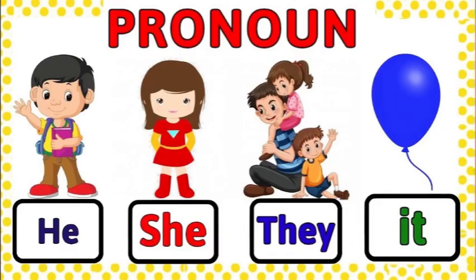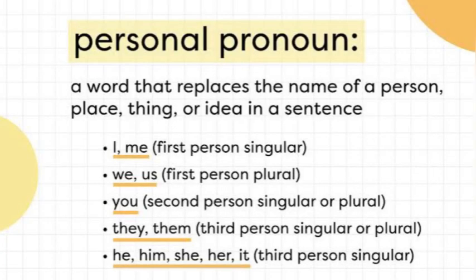اس slide کو دیکھئے — pronoun کو مزید explain کرنے کی کوشش کی ہے۔ علی ایک لڑکا ہے؛ اس کا نام replace کریں گے تو 'he' لے آئیں گے۔ جس طرح Arabic grammar یا Urdu grammar میں مذکر کی ضمیر اور مونث کی ضمیر ہوتی ہے۔ جب جمع ہو جائے — تین سے چار لوگوں کے نام ہوں — تو 'they' لے آتے ہیں۔ غیر جاندار چیز کے لئے 'it' کا استعمال کرتے ہیں — جیسے balloon، mobile phone۔